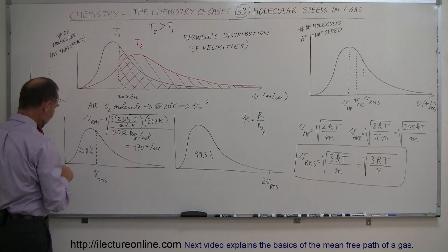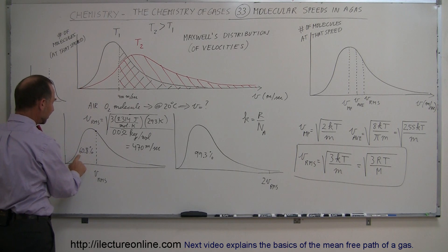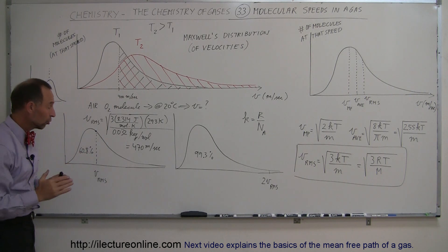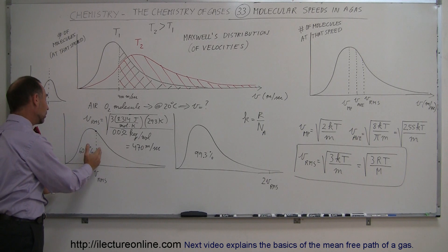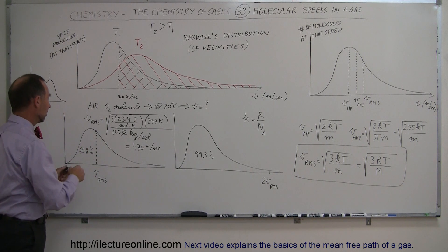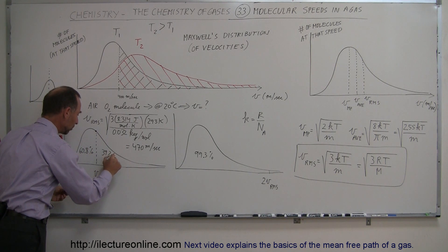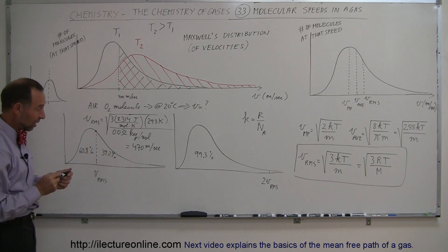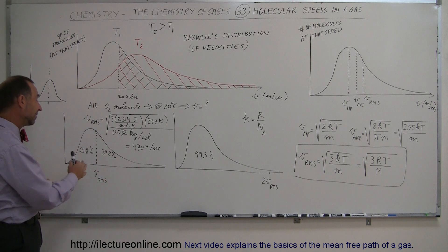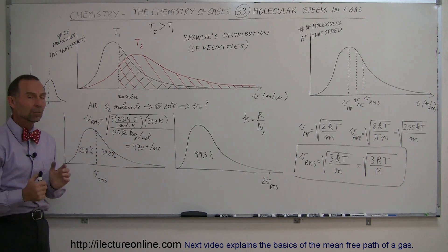It turns out that typically on average, 60.8% of all molecules travel slower than the RMS velocity, which leaves you about 39.2% of all the molecules that travel faster than the root mean square velocity. However, what that means is that that's kind of the representative velocity in terms of the energy contained in a mole of gas.